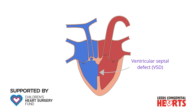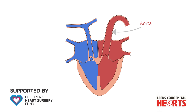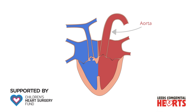There are two other characteristic features of Tetralogy of Fallot. The muscle of the right ventricle is thicker than normal, and this occurs because of the obstruction to blood flow to the lungs. Lastly, the position of the aorta — the main blood vessel that takes blood from the left ventricle to the body — is shifted so that it lies over the ventricular septal defect.